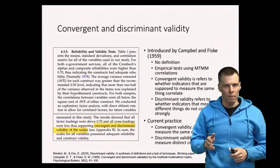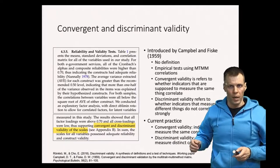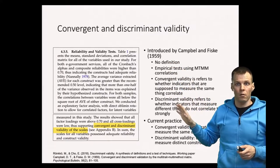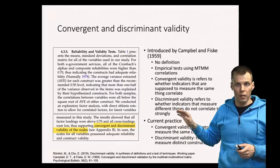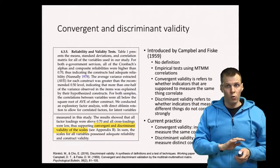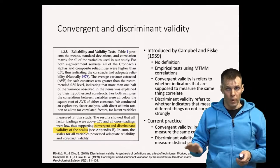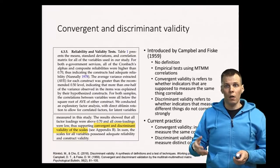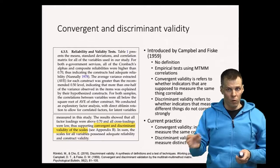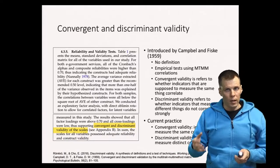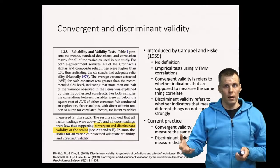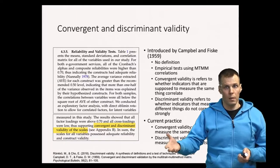The concepts of discriminant validity and convergent validity date back to a paper by Campbell and Fisk from 1955. In that article the authors presented a concept of the multi-trait multi-method matrix, which is a set of correlations when you measure at least two traits each with at least two methods. They argued that some correlations in the table and lack of correlations are evidence of convergent validity and discriminant validity.